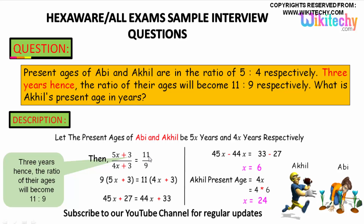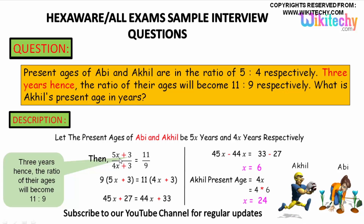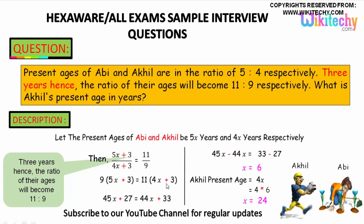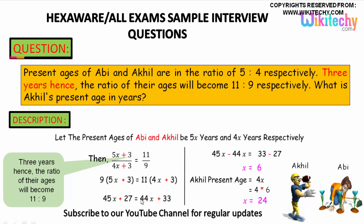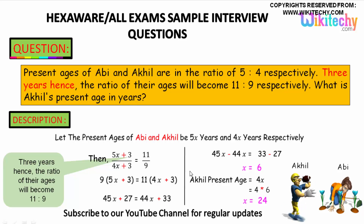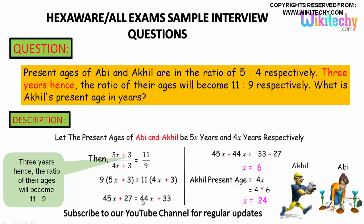Cross multiplying: 9 into (5x + 3) is equal to 11 into (4x + 3). This gives us 45x + 27 = 44x + 33.